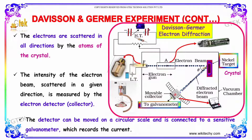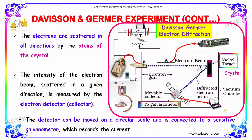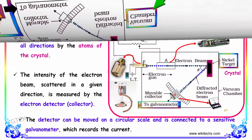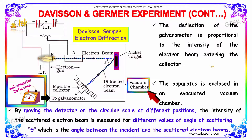The electrons are scattered in all directions by the atoms of the crystal. The intensity of the electron beam scattered in a given direction is measured by an electron detector referred to as the collector. The detector can be moved on a circular scale and is connected to a sensitive galvanometer which records the current. The deflection of the galvanometer is proportional to the intensity of the electron beam entering the collector. The apparatus is enclosed in an evacuated vacuum chamber.